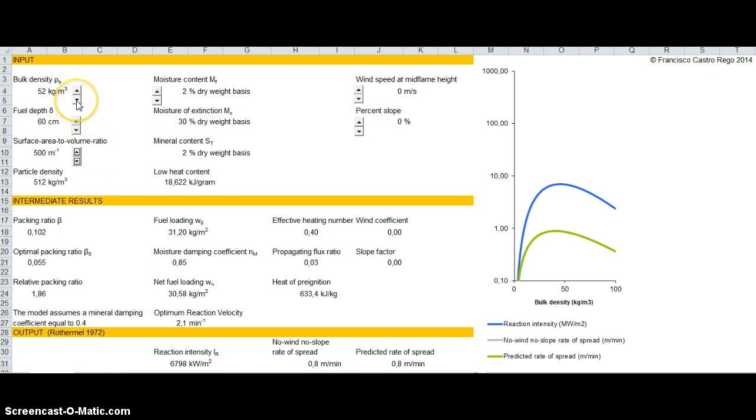If you go back to lower values of bulk density and then change the moisture content, increasing moisture content will decrease the reaction intensity and rate of spread. Eventually, after a certain value—we are at 20% moisture content here—we're getting very close to the 30% moisture of extinction. So practically, the rate of spread is minimal and the fire will not be sustained. You can see the effect of moisture content on the process.